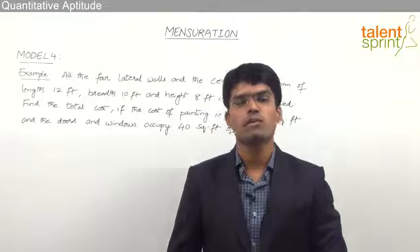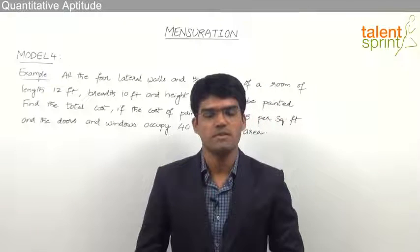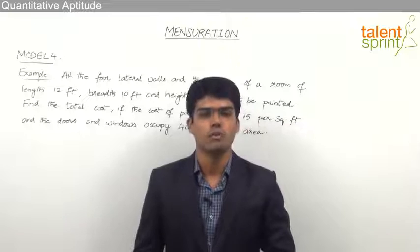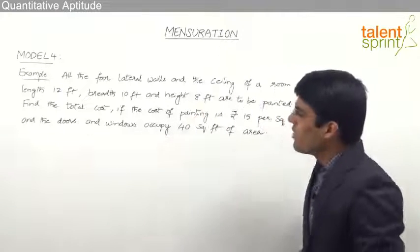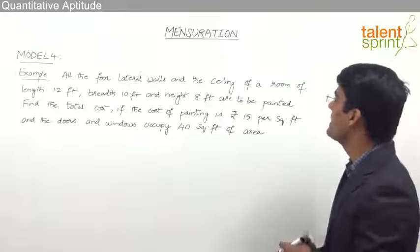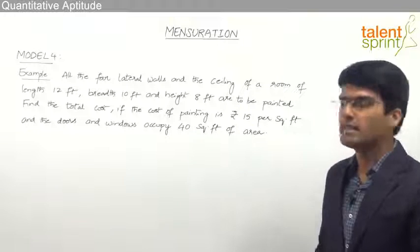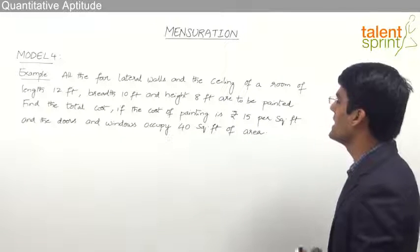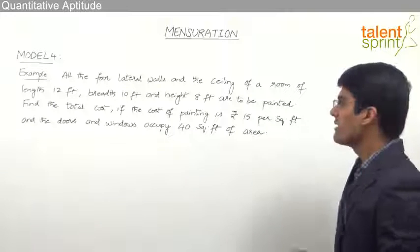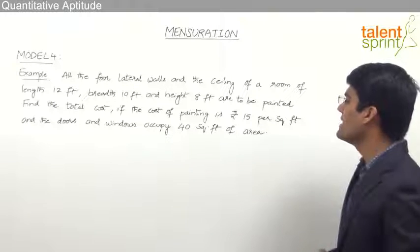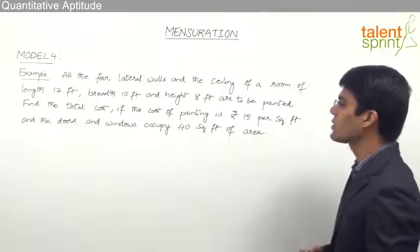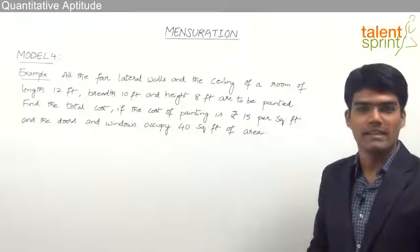Let us now take the fourth model from the topic of mensuration, which is based on painting the walls of a given room. The question says: all the four lateral walls and the ceiling of a room of length 12 feet, breadth 10 feet and height 8 feet are to be painted. Find the total cost if the cost of painting is Rs 15 per square feet and the doors and windows occupy 40 square feet of area.